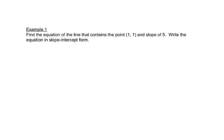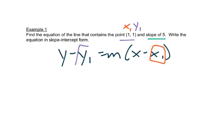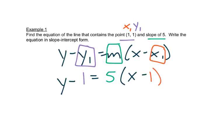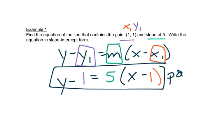Here's an example. We're given a point and a slope, so we're going to use point-slope form. This is going to be our x₁ and our y₁ and our slope is 5. So x₁ is going to go here, y₁ is going to go here, and our slope will go here. We have y minus 1 equals 5 times x minus 1.